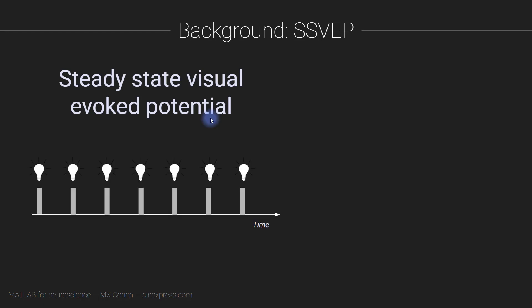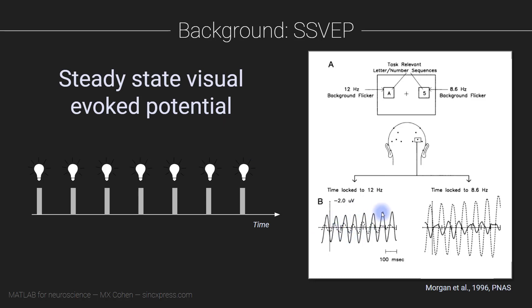It turns out that if you flicker a light at regular intervals, like a strobe light, then the visual system in your brain will respond at the same frequency, so at the frequency of the light stimulation.